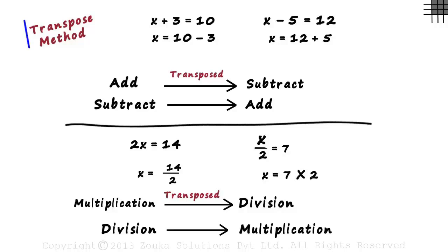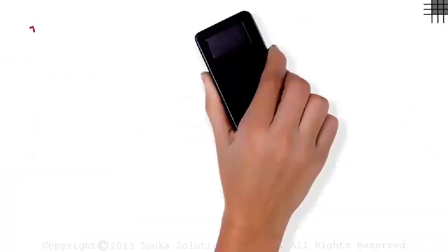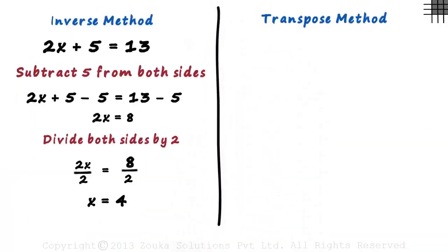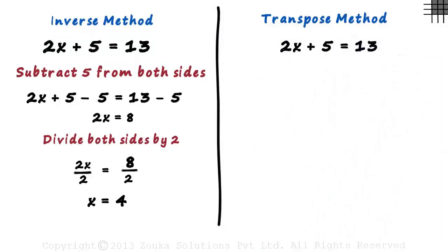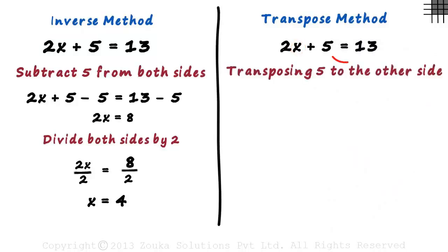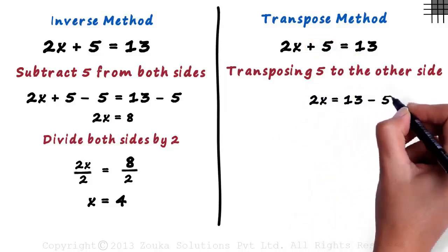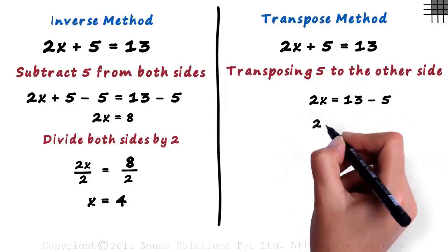Now let's see how the transpose method helps us solve an equation. Let us solve the same equation we solved using the inverse operations method: 2x plus 5 equals 13. Our aim is to keep just the variable on the left hand side. So we transpose 5 to the other side. Since it is added on the left hand side, we transpose it to the right hand side and subtract it from 13. We get 2x equals 13 minus 5, which gives us 2x equals 8.